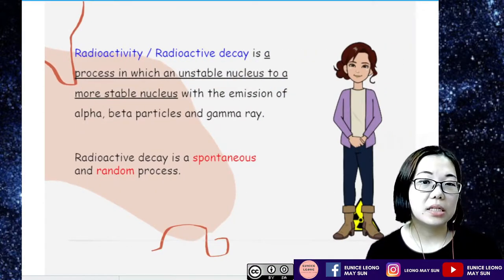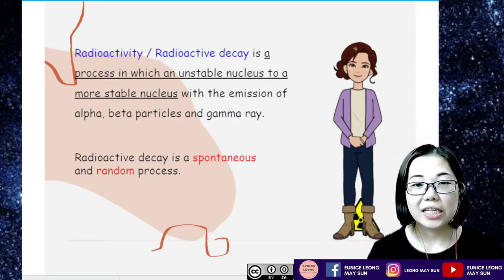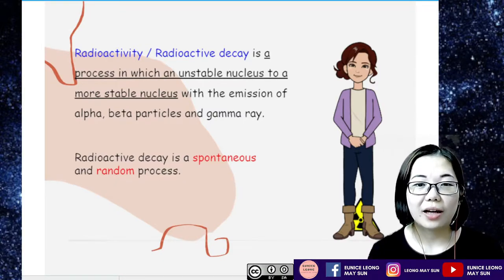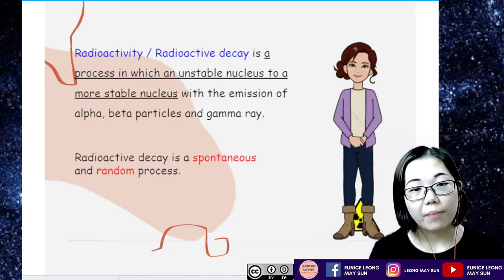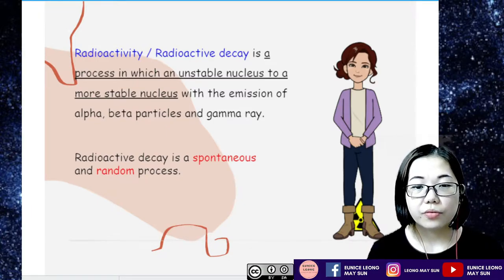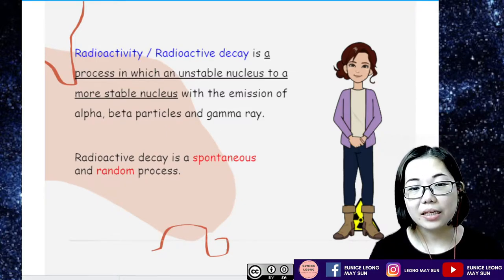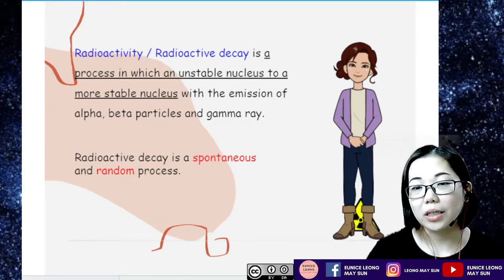So what is radioactivity or radioactive decay? By definition it is actually the process in which an unstable nucleus becomes a more stable nucleus by emitting out alpha, beta particles and also gamma ray. So radioactive decay is a spontaneous and random process. But what does spontaneous and random actually mean?